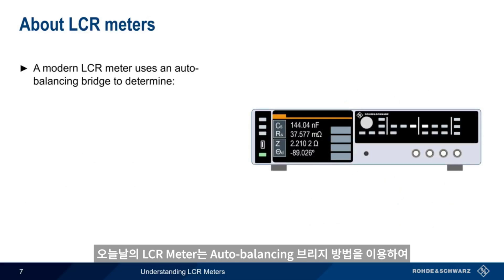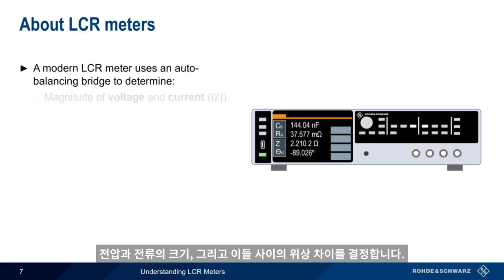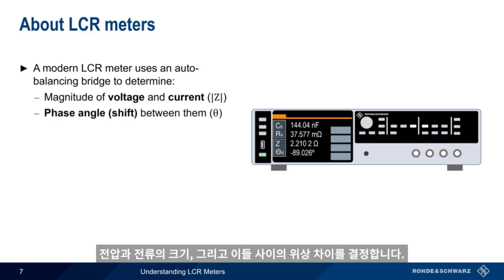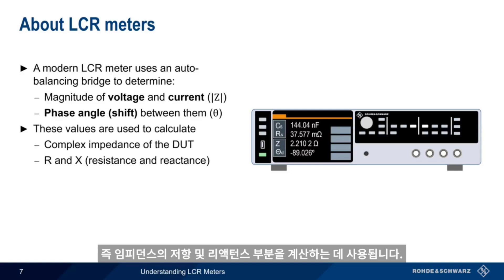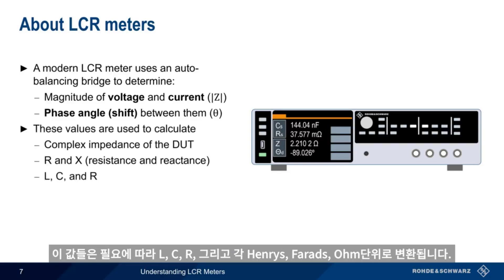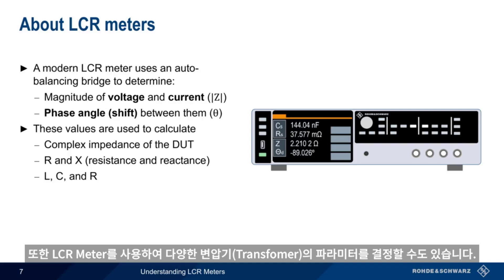Modern LCR meters use a special auto-balancing bridge to determine the magnitude of the voltage and current, as well as the phase shift or angle between them. These values are used to calculate the complex impedance of the device under test — that is, the resistive and reactive parts of the impedance — which are then converted into L, C, and R, in henrys, farads, and ohms, as appropriate. It's also possible to use an LCR meter to determine various transformer parameters, something we'll come back to in a few minutes.